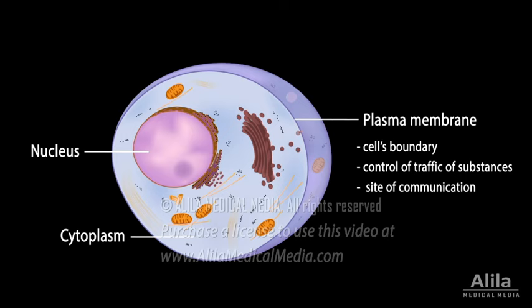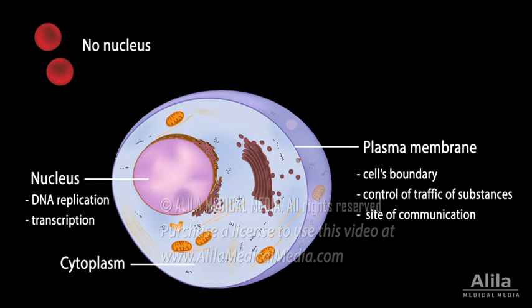The nucleus contains genetic material — the DNA — and is where DNA replication and transcription, the major step of gene expression, take place. Most cells have one nucleus, with the exception of red blood cells, which have none, and some other cells that have multiple nuclei.